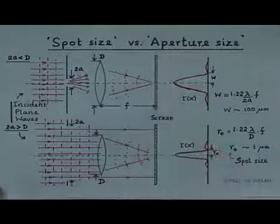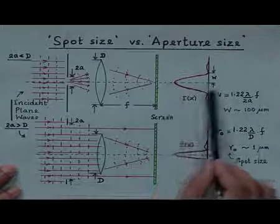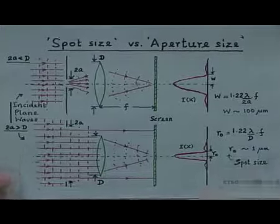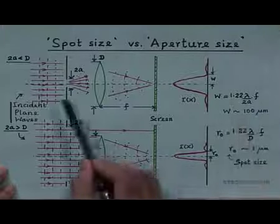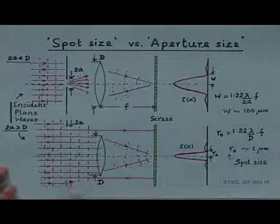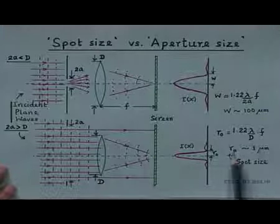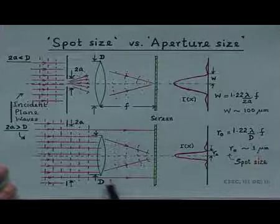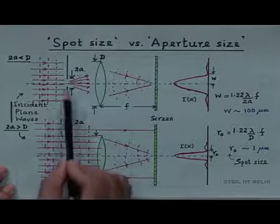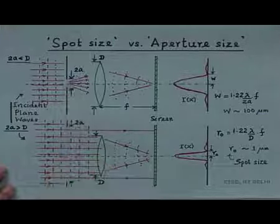To put numbers to this: for a 1 mm aperture with typical parameters, w is of the order of 100 microns. But if the lens diameter of 5 centimeters determines the spot size, then r₀ is of the order of 1 micrometer. This shows how the spot size changes dramatically depending on whether the aperture or the lens diameter is the limiting factor.